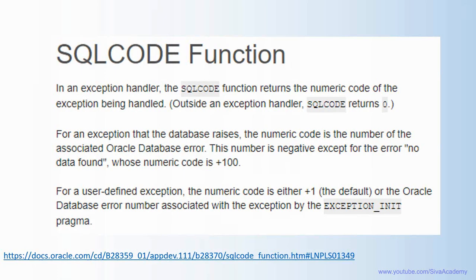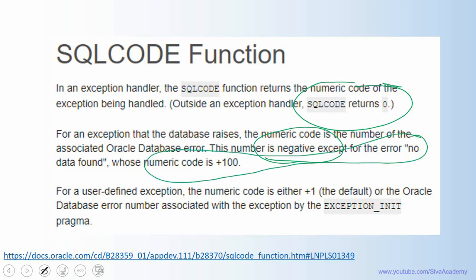A bit more information about SQLCODE. SQLCODE will typically give you the last occurred exception in the exception handling section. But if you are executing this outside the exception handling, this returns zero. And one more thing, SQLCODE will return you the negative number typically, but for few cases like no data found exception, it returns 100. And also for user defined exception, it returns plus one, unless otherwise we explicitly assign the exception using pragma exception init.